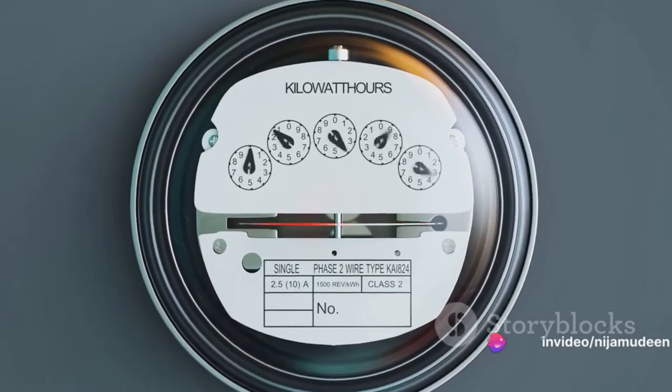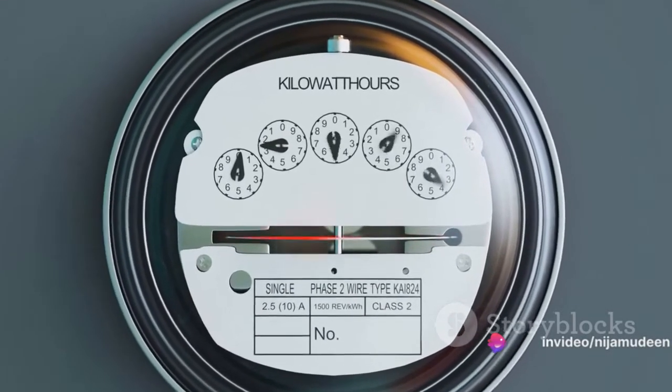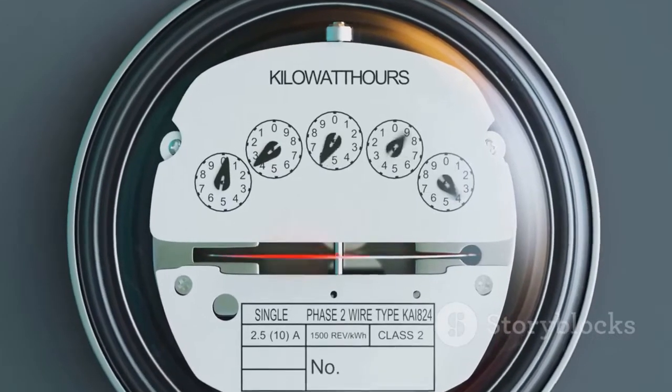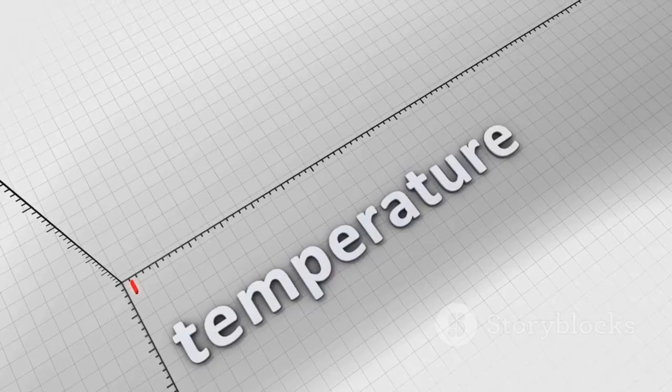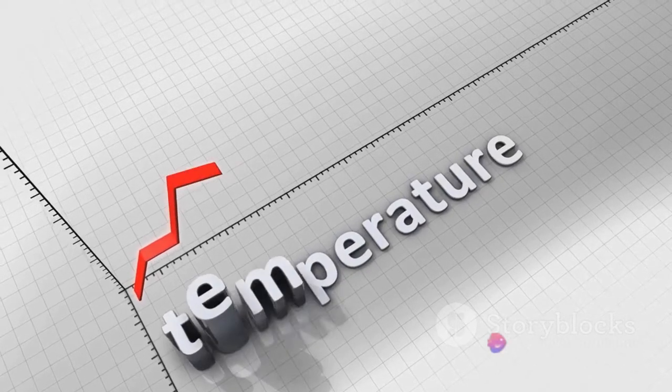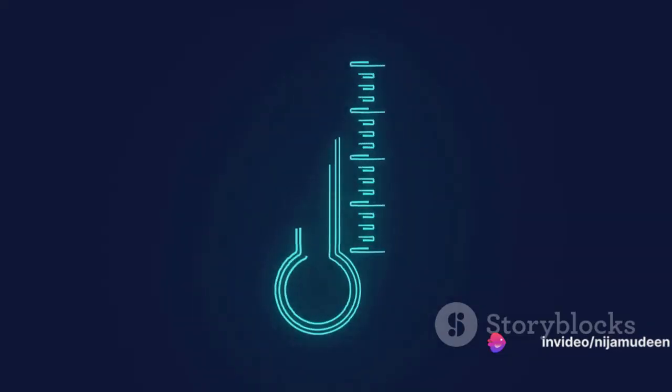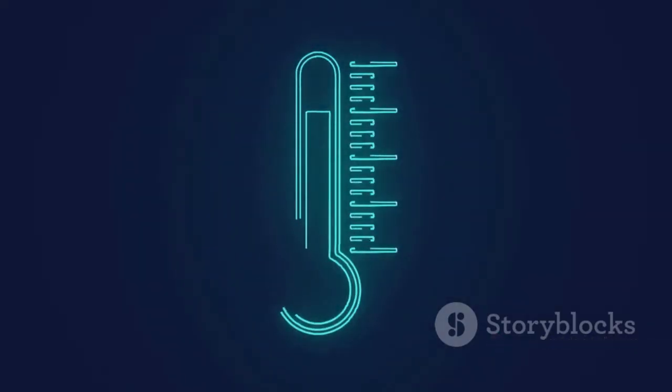If your RTD reads 101 ohms, the actual resistance might only be 100 ohms, with the extra 1 ohm coming from the lead wires. Why does this matter? Well, even a slight change in resistance in an RTD can correspond to a significant temperature change. So, if you don't account for the lead wire resistance, your temperature reading can be off.